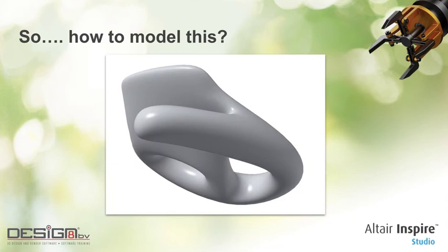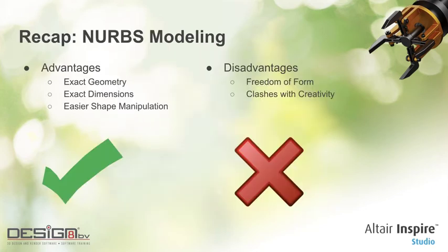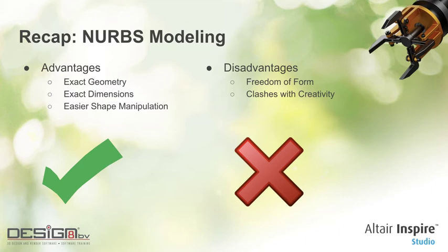In short, NURBS modeling has advantages: it can represent really exact geometry and exact dimensions, and you can create complex shapes that are easy to manipulate via input curves. But it has disadvantages — there is a drawback in freedom of form, not everything can be modeled, and in my opinion it clashes with creativity very often. As soon as you introduce intelligence to a system, that clashes with creativity.